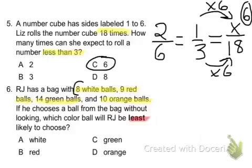So least likely. Let's look at the numbers. We have 8, 9, 14, and 10. Which one is he least likely to choose? Well, the one with the smallest number, which in this case is white. So the answer to number 6 is A.